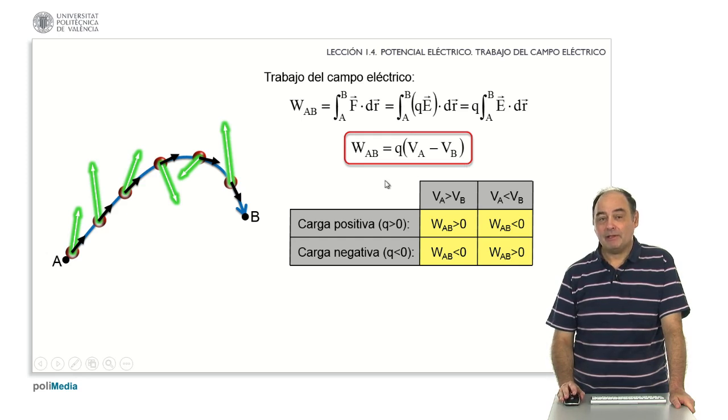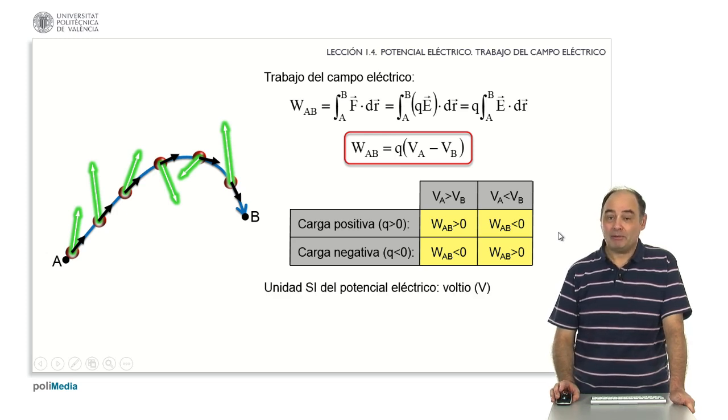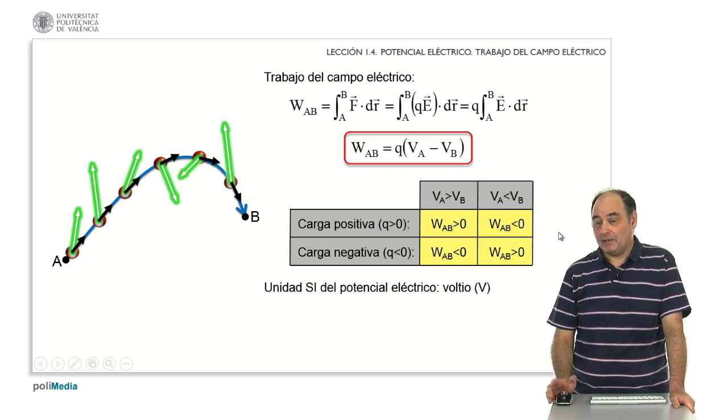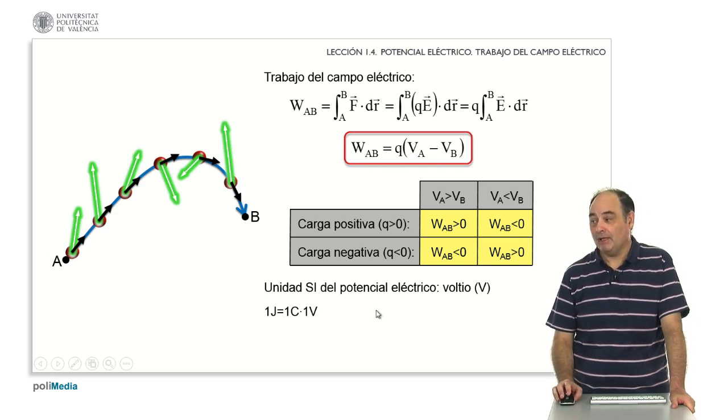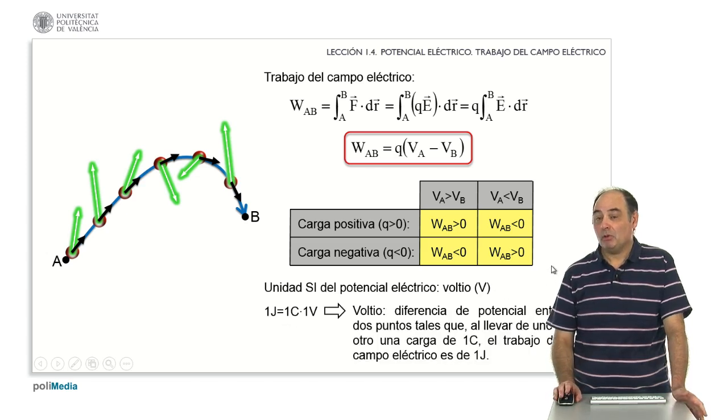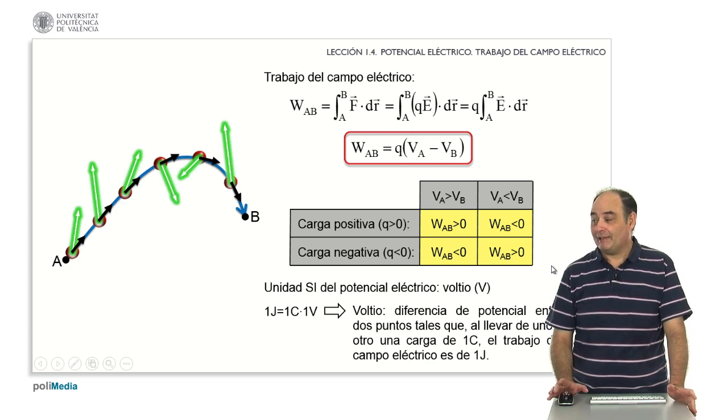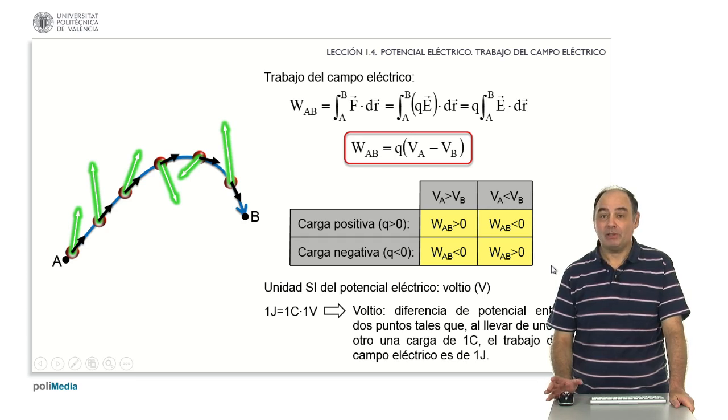Moreover, this relationship between work and potential difference allows me to define the unit of potential. The international system unit of electric potential is the Volt. The symbol is capital V in honor of Volta. The definition is that the Joule must be equal to the product of Coulomb per Volt. It is called Volt to the potential difference between two points such that when taking from one to the other a charge of one Coulomb, the work done by the electric field is one Joule.